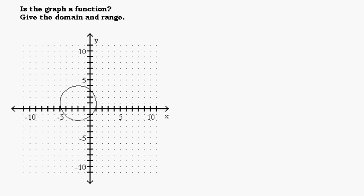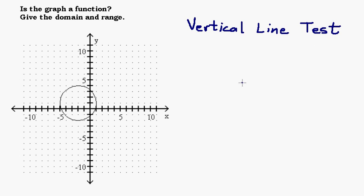There's a very easy way to determine whether a graph is a function and it's called the vertical line test. The vertical line test says if you can draw a vertical line somewhere on your graph and it touches your graph in more than one spot, then your graph is not a function.